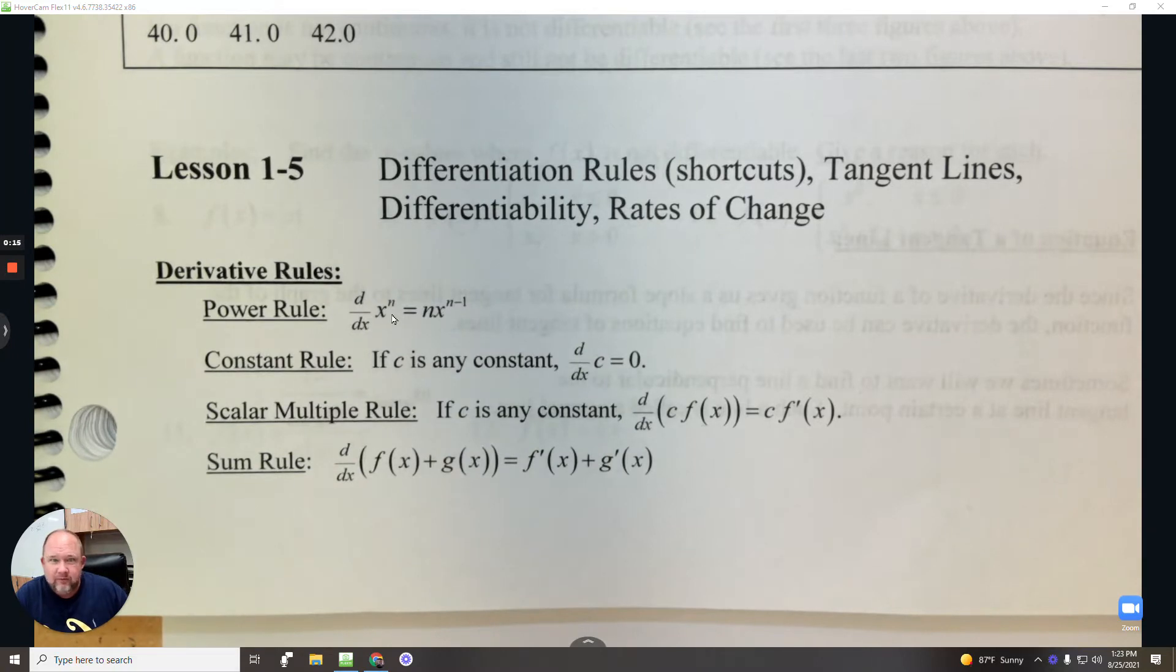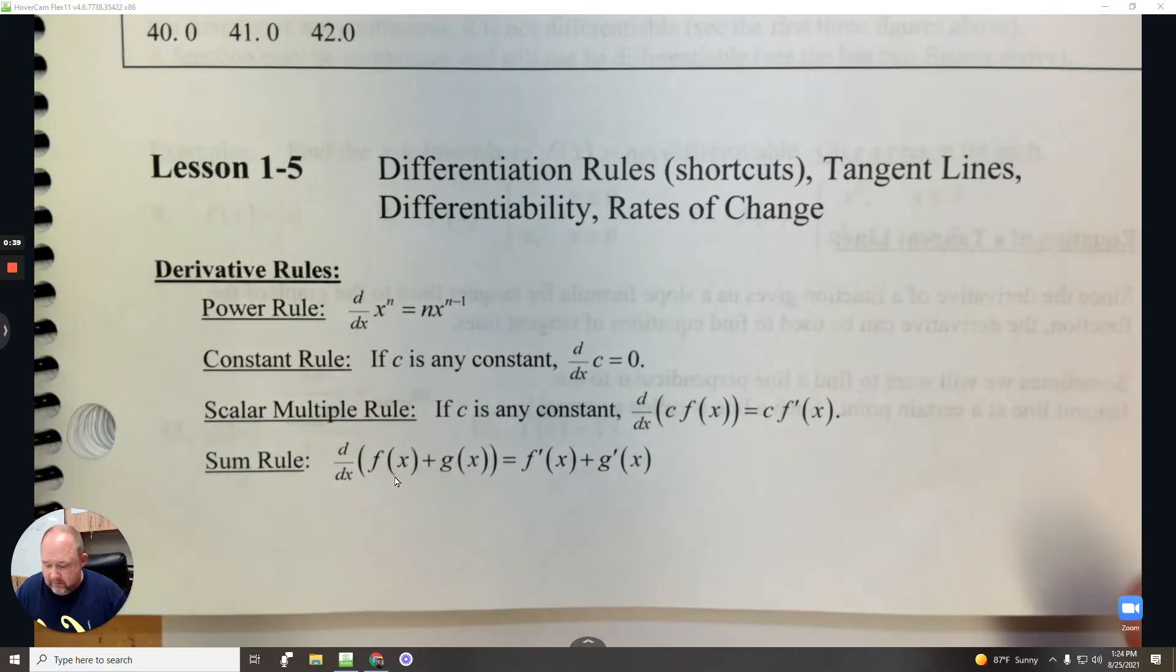The Power Rule is you take the exponent, multiply it in front, subtract 1 to the exponent. The derivative of any constant is always 0. Scalar multiple rule means if you have a number being multiplied in front, you multiply it when you do the exponent. The sum rule means if you have multiple terms adding or subtracting, you just take the derivative of each one separately.